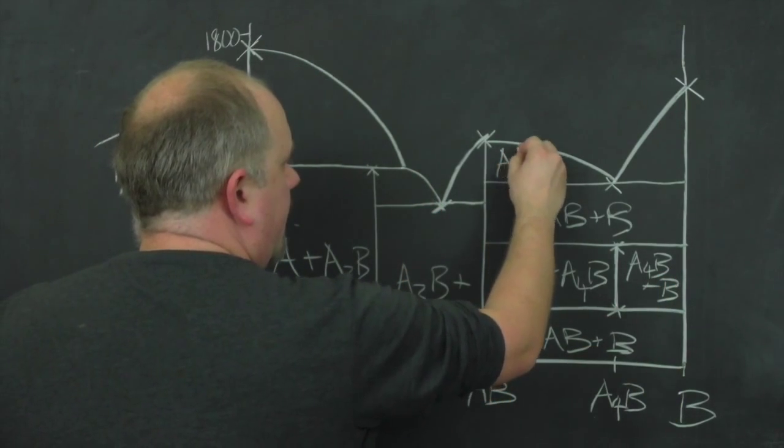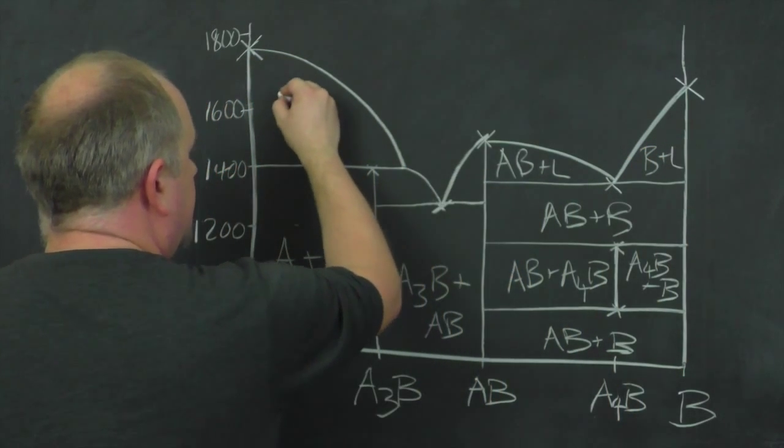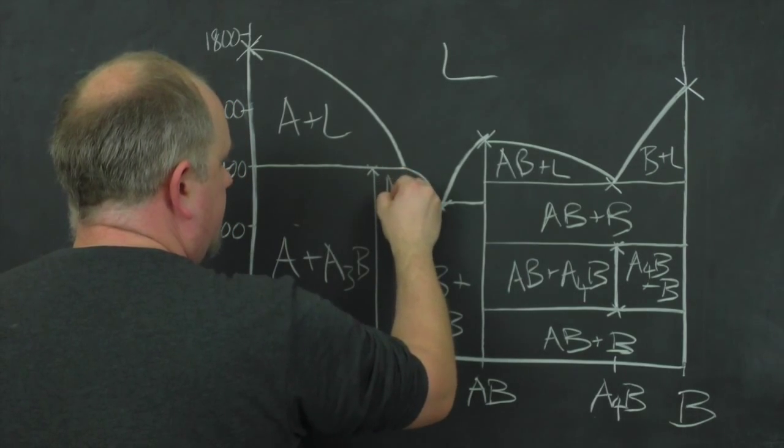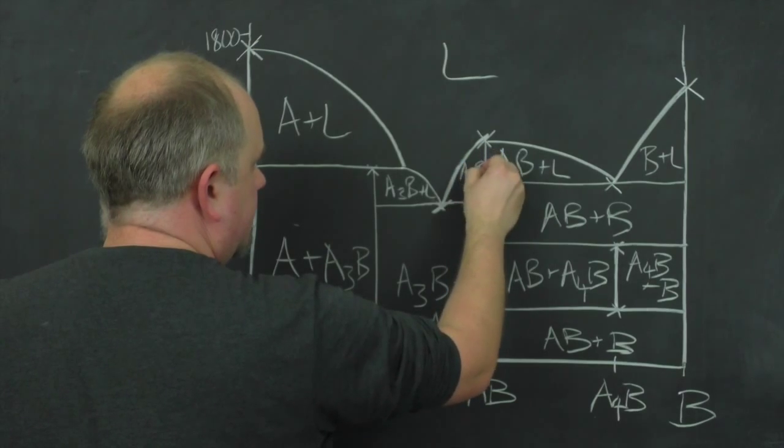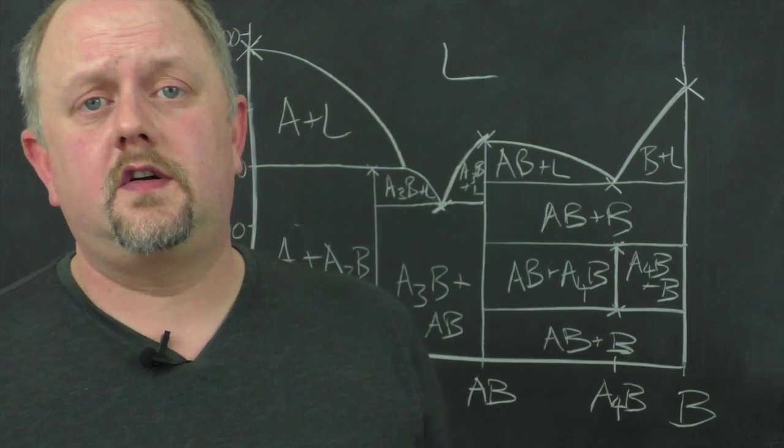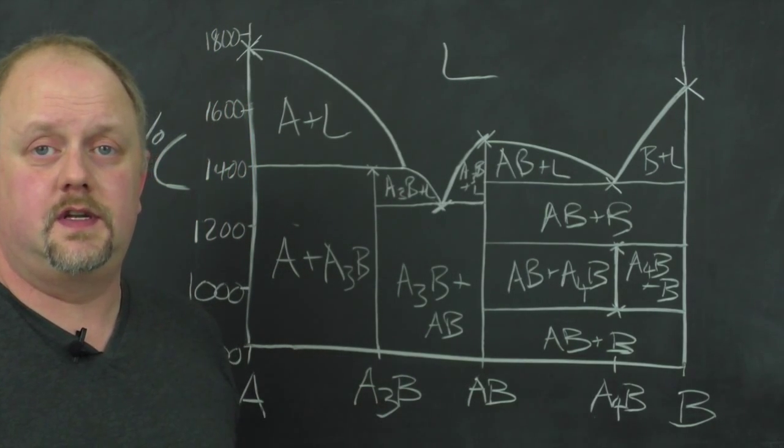Then AB plus liquid, B plus liquid, A plus liquid, liquid at the top, A3B plus liquid here, and the same in here. And so there you have a constructed and labeled phase diagram from a very brief description. So here we go.